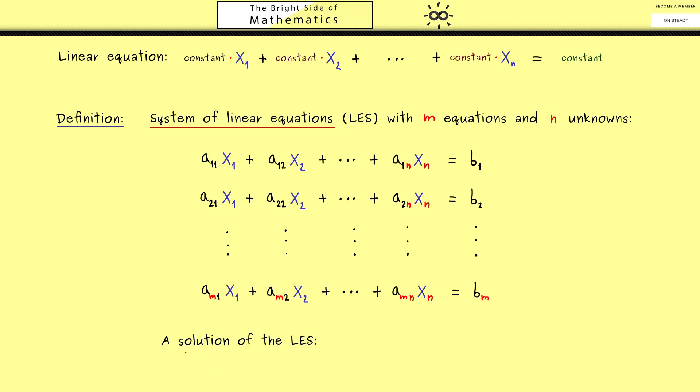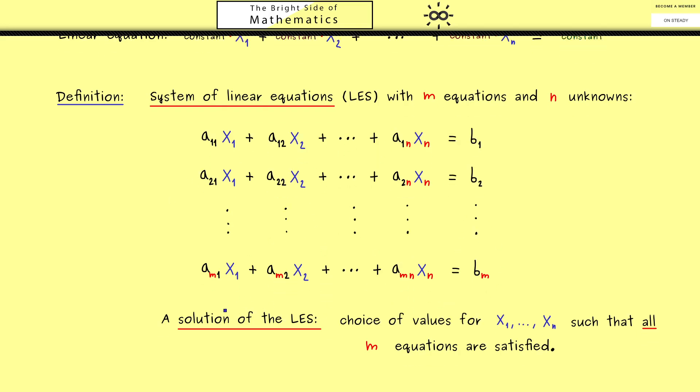And then as before we can talk about solutions of the system. It's simply a choice of values for the unknowns such that all m equations here are satisfied. In fact the most important thing here is that all equations are satisfied at the same time. Now as often when we talk about solutions two questions arise. The first is about the existence of solutions and the second about the uniqueness. And both things we will discuss in detail in later videos.